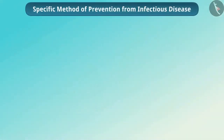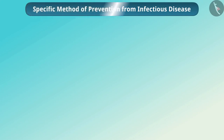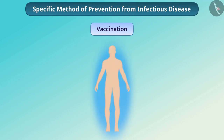Now let's talk about the specific method of prevention of infectious disease. The specific method of preventing infectious disease is vaccination. Vaccination is related to our immune system.